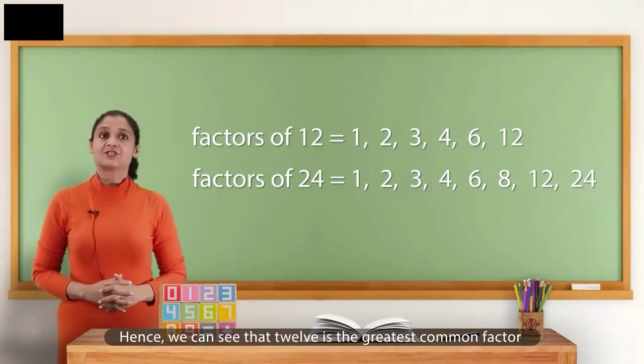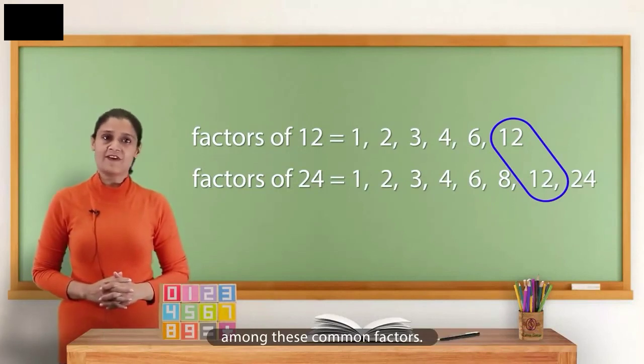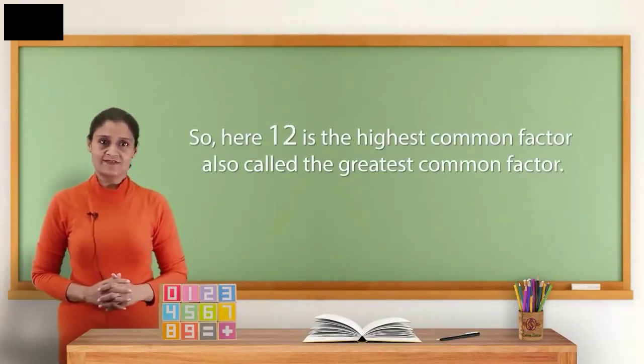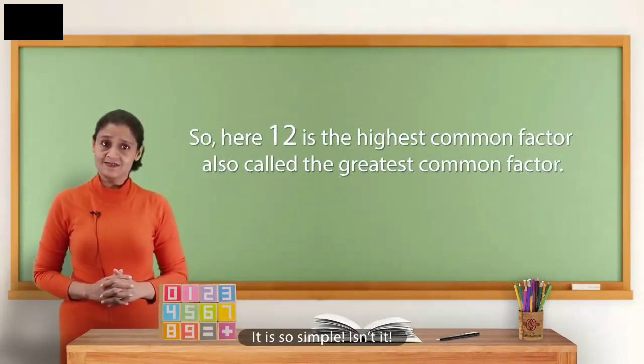Hence, we can see that 12 is the greatest common factor among these common factors. So, here, 12 is highest common factor also called the greatest common factor. It is so simple, isn't it?